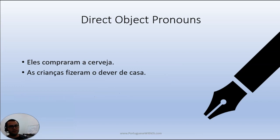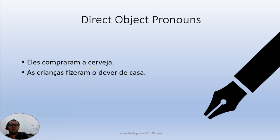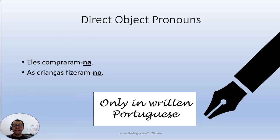Quick twist. 'They bought the beer,' 'the children did their homework.' We have a different sound here: the ending 'em' — 'compraram,' 'fizeram.' When you use a pronoun to substitute the noun — 'a cerveja,' 'dever de casa' — you can put it before the verb, but in this situation you can also put it after the verb. In writing, you need to include the N to facilitate pronunciation: 'eles compraram-na,' 'as crianças fizeram-no,' referring to the beer and the homework. But it's only used in written Portuguese — people really don't speak like that.